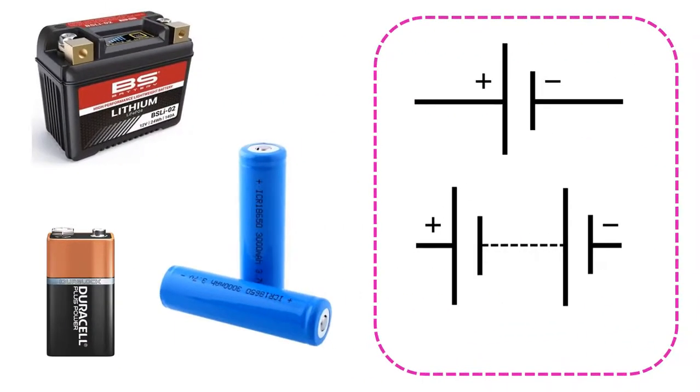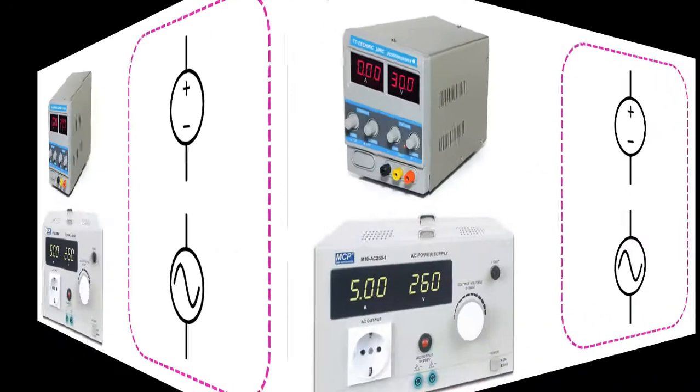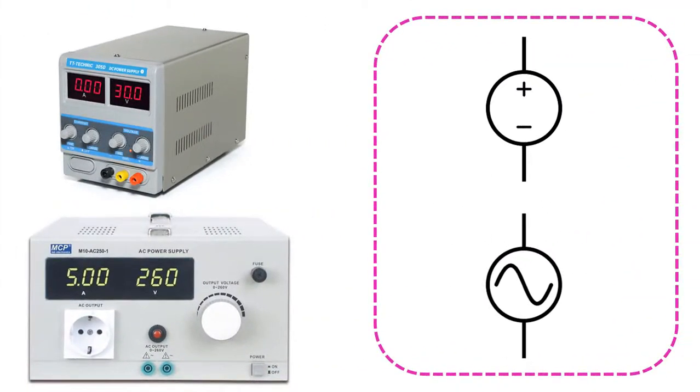Single cell batteries providing direct current are indicated by the above symbol. The long line represents the positive pole and the short line represents the negative pole. Batteries and accumulators formed by combining batteries are indicated by the symbol below. Power supplies that can deliver direct current are indicated by the above symbol. Instead of this symbol, symbols used for batteries and cells are also used. The following symbol is used for alternating current sources. Depending on the shape of the generated signal, the sign in it may change.